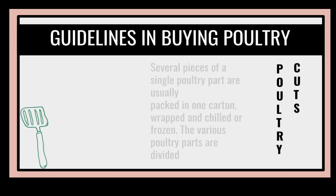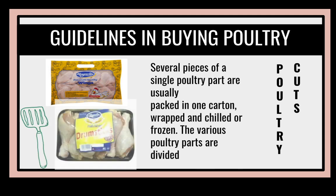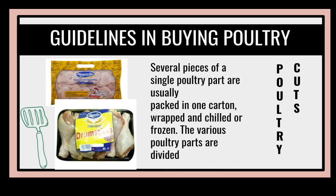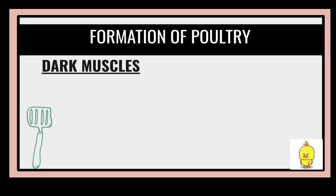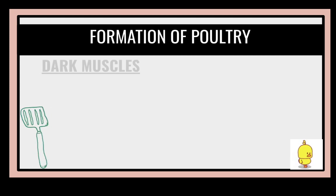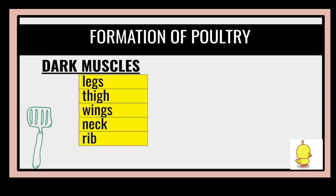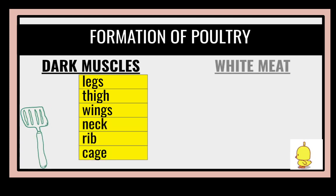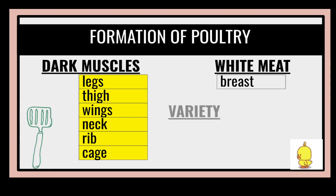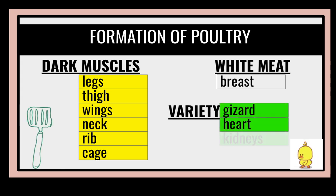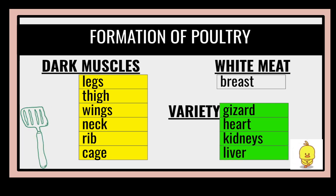Poultry also refers to several species of single poultry parts that are usually packed in one carton, wrapped and chilled, or frozen. For the formation of poultry, we have the dark muscle, which includes the legs, thighs, wings, neck, and rib cage. White meat includes breasts, and for variety meat: gizzard, heart, kidneys, and liver.